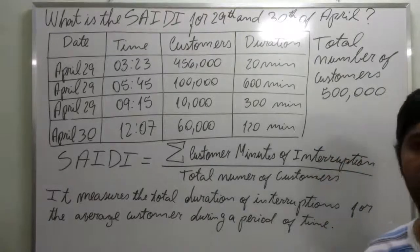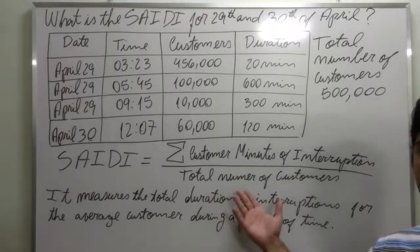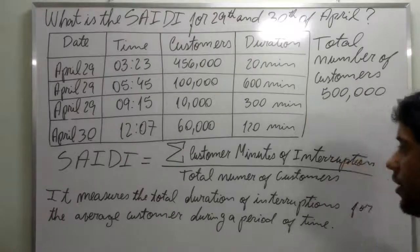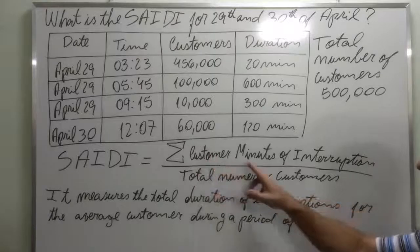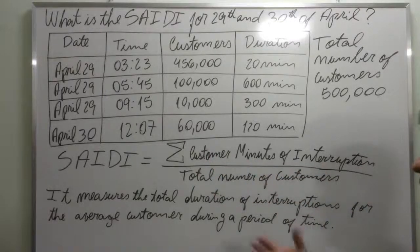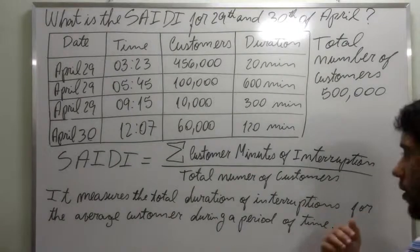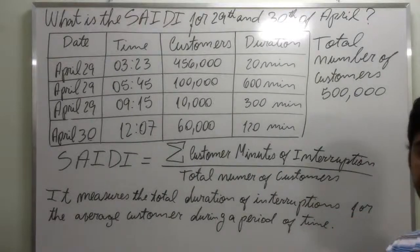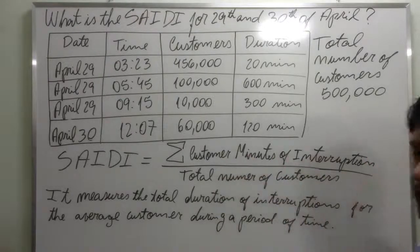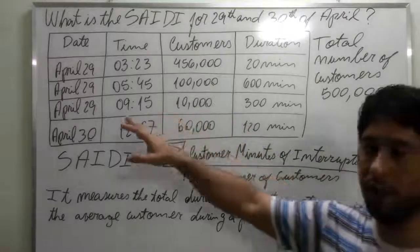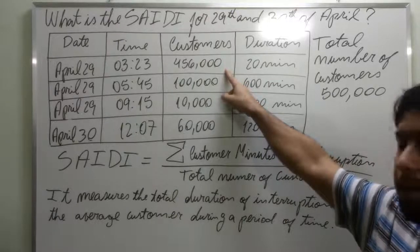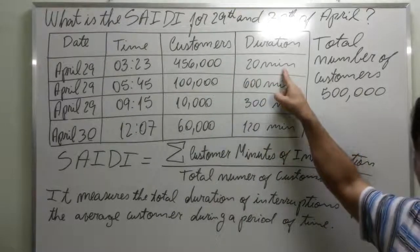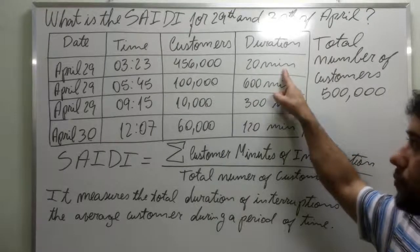We calculate this index using the expression provided by IEEE. This expression says that we need to compute the customer minutes of interruption and divide by the number of customers of that area of concession of that utility. Customer minutes of interruption is the product between the number of customers interrupted by that outage and the duration of the interruption.